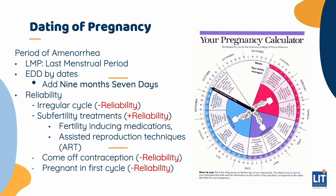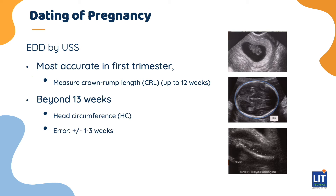The big problem with using just the last menstrual period to calculate pregnancy dating is reliability. If a patient's cycles are irregular, the dates may not be reliable. If the person has used subfertility treatments like fertility-inducing medications or assisted reproductive techniques, the dating is more reliable. If a person has come off a combined contraceptive pill and got pregnant in the first cycle, those dates may not be reliable. The second way is using an ultrasound scan, most accurate when done in the first trimester. We measure the CRL, crown rump length, up to 12 weeks. If the person presents beyond 13 weeks, the head circumference is measured, giving us the EDD, though there is a plus or minus 1 to 3 weeks error.